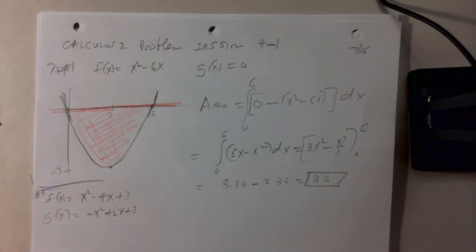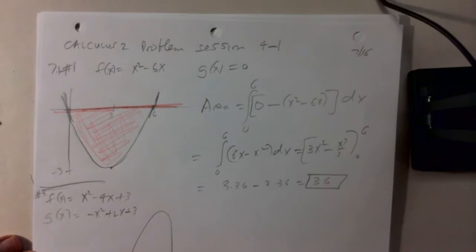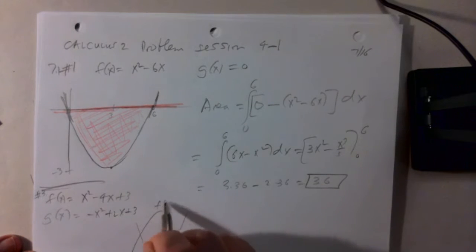So the first thing, and in your book, does it show you the graph? Yeah. Okay, so you know, this is a parabola, f of x, going down. The other is a parabola going up. So this is f of x.